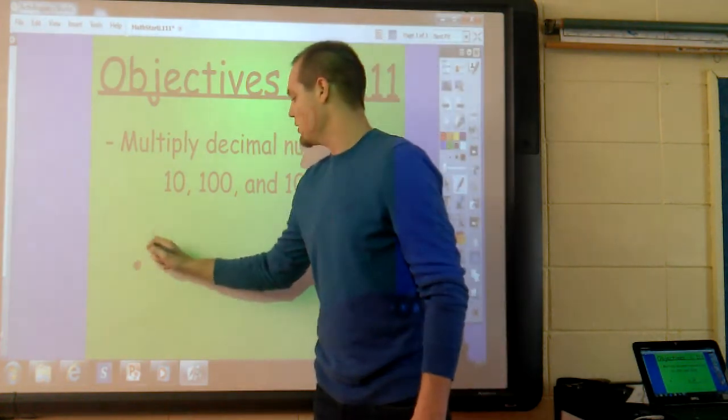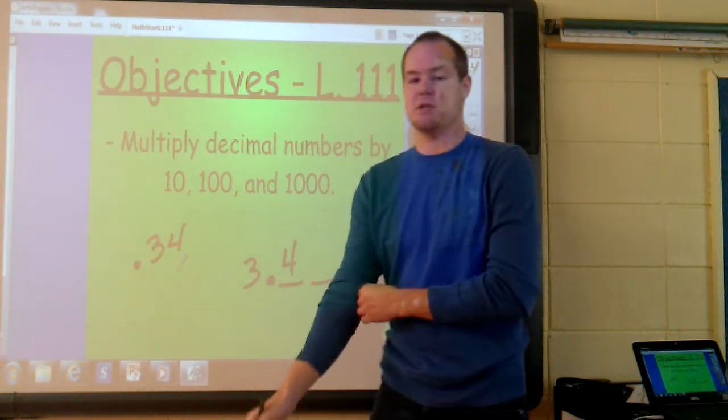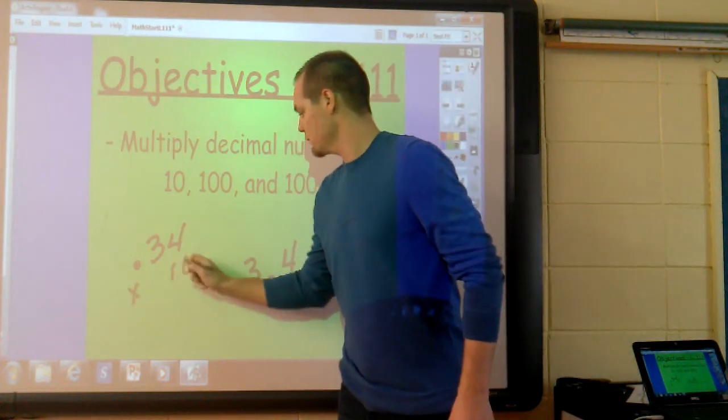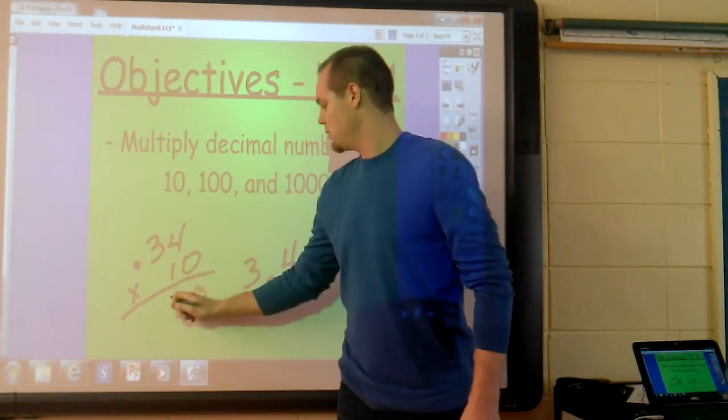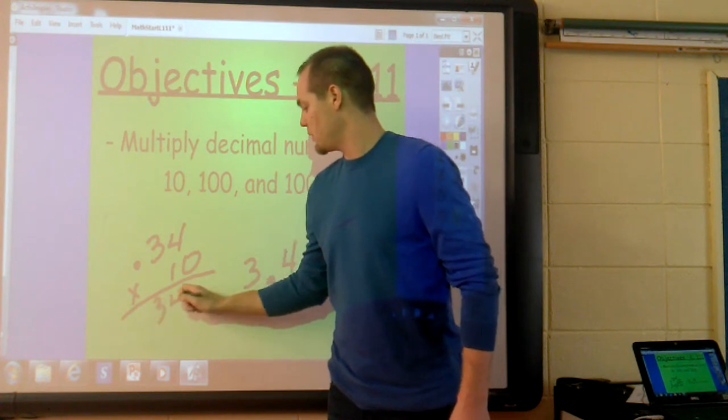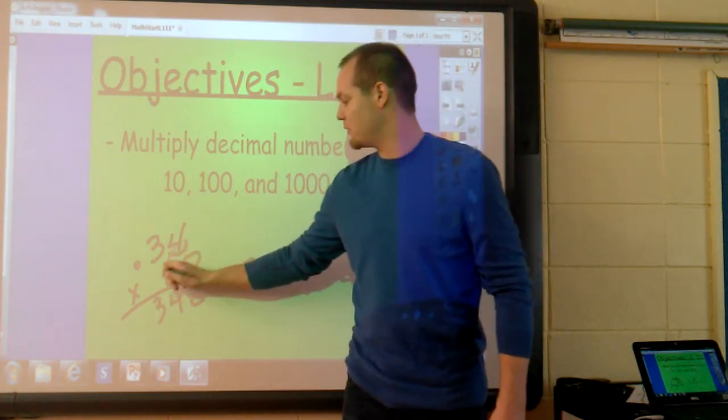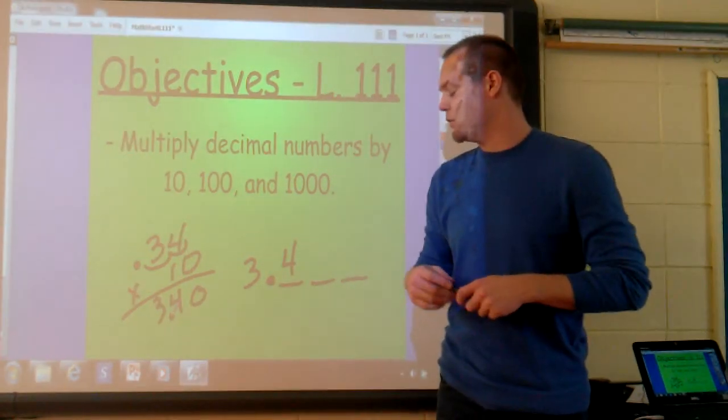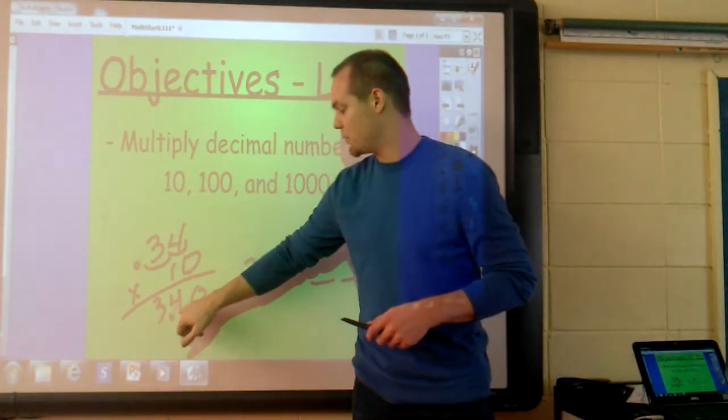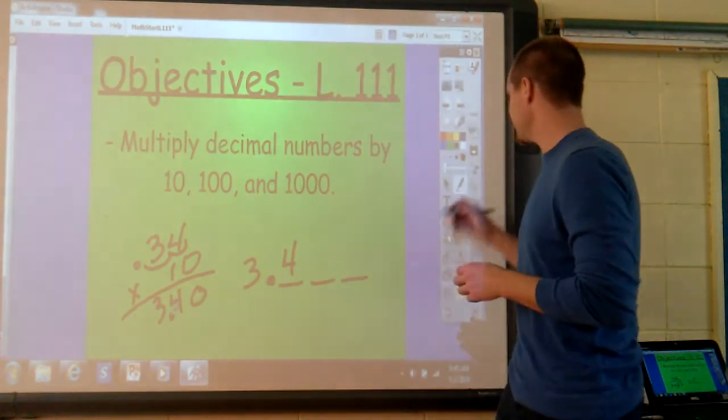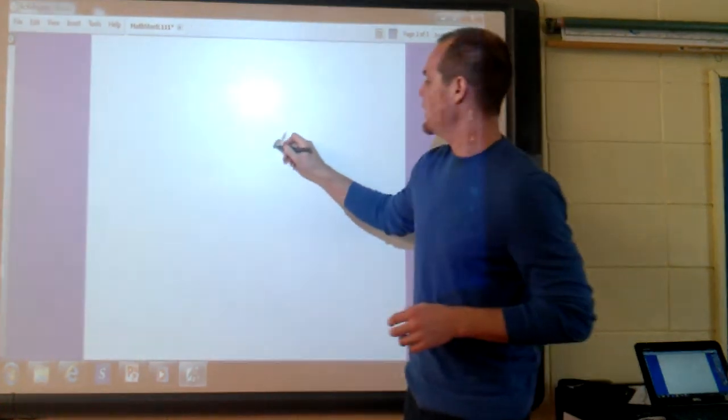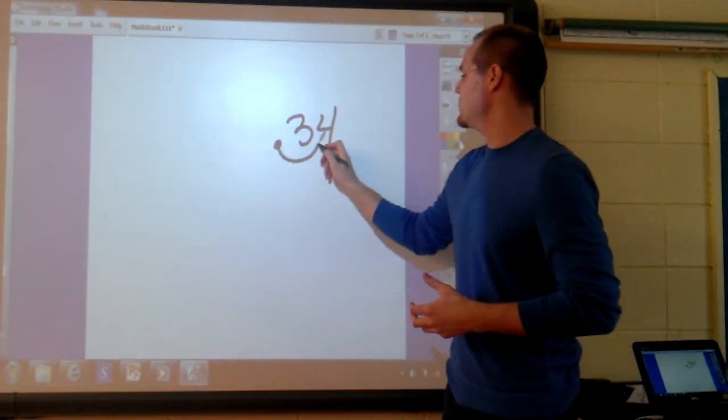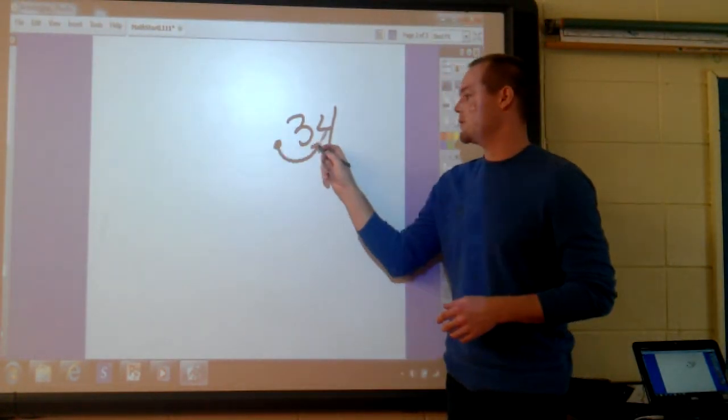So if we have 34 hundredths, we can multiply that number by 10. We'll get 0.34. And we can understand that we have two decimal places. One, two, and we can move our place that way. Or we can move our decimal that way and we get 3 and 4 tenths. Another option, if we have the number 34 hundredths, another option when multiplying by 10, you just take your decimal point and move it one spot to the right.